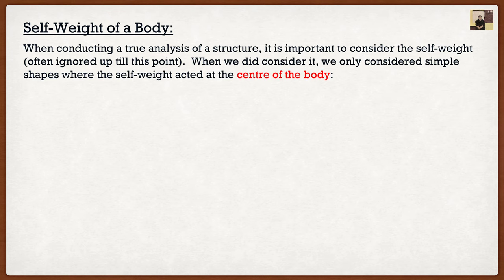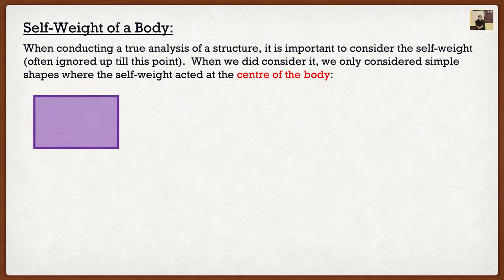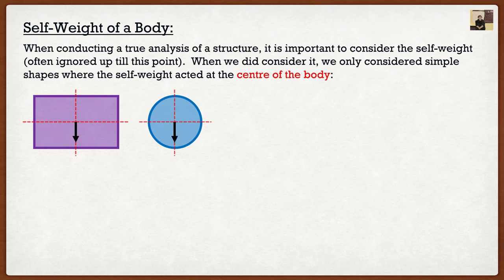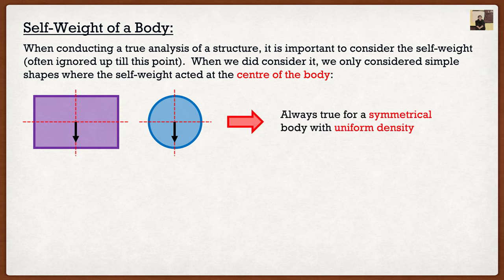If you ignore self-weight in a third or fourth year class, I will dock marks — it's very important. But the nice thing is that in this course, when we did consider self-weight, we always said it mainly acts at the center of a body. For a rectangular beam, the self-weight force acts right in the middle. For a circle, it acts at the center. This is always true for a symmetrical body with uniform density. Our beams are usually rectangular and typically made of one material, giving a uniform density.